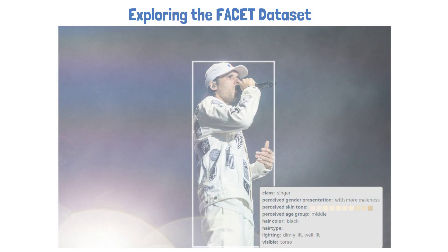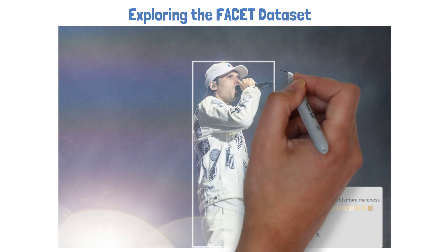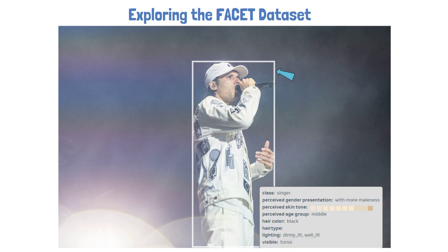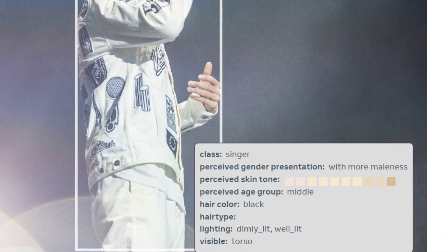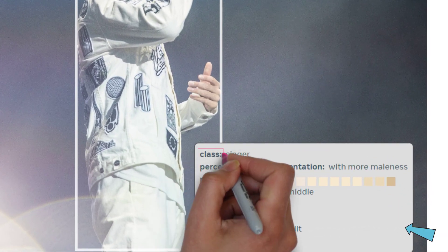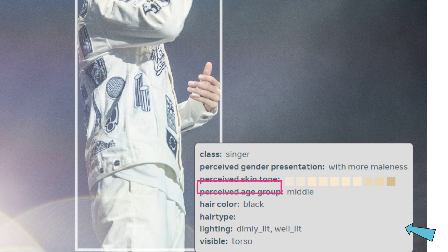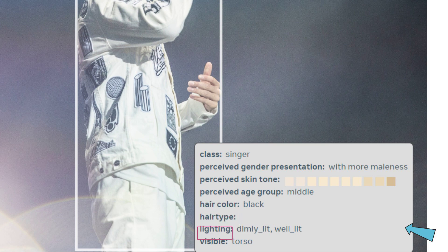Here is one example of an image of a singer. We can see that there is a box around the singer in the image, which means we can use the dataset for object detection evaluation. Zooming in, we can see a few more annotations, such as the class of the image, which is 'singer'; the gender, which is male; a skin tone, which here shows mostly light skin colors; age group, provided as middle age; hair color, which is black; hair type, which is missing in this case; lighting; and which part is visible.